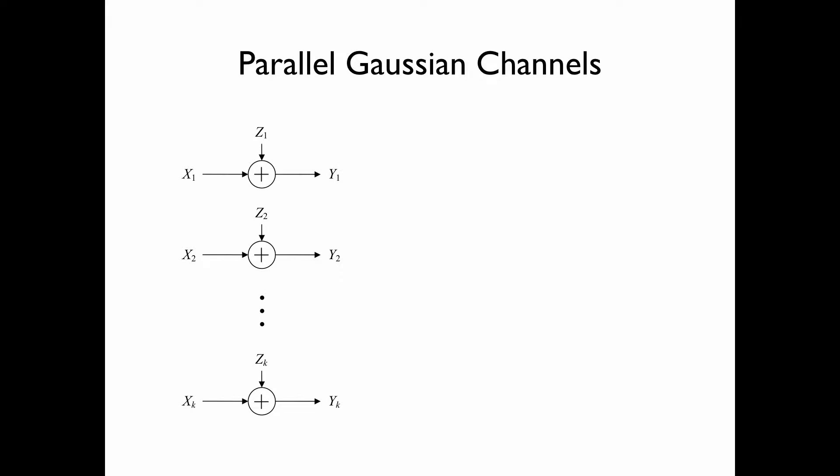This is the system of parallel Gaussian channels that we have studied, which can be represented more compactly by the figure on the right-hand side. Here x is the random vector consisting of components x1, x2, up to xk; y is the random vector consisting of components y1, y2, up to yk; and z is the noise vector consisting of components z1, z2, up to zk.